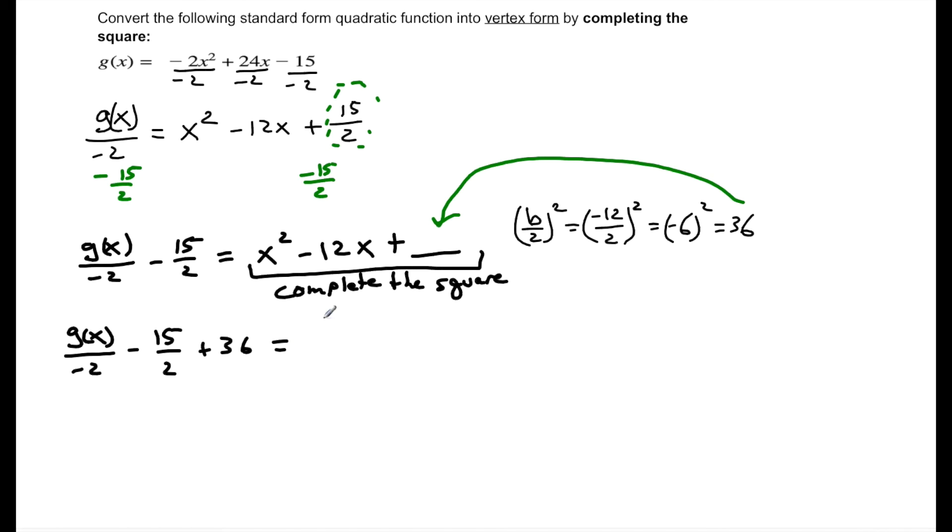And equals my perfect square trinomial that I've created. I know that the perfect square trinomial is going to be in the form x plus b over 2 squared. My b is negative 12, so it's going to be x minus 6 squared.